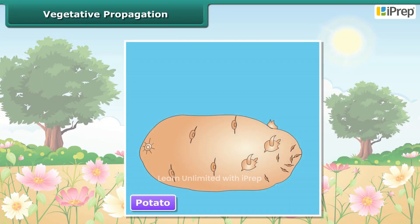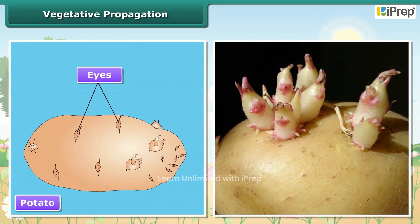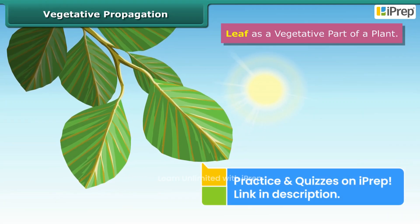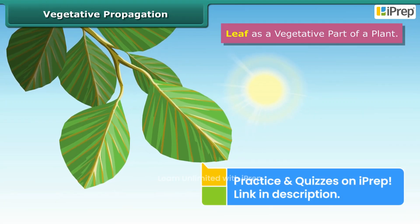Do you know potato is the edible stem of a plant? It bears small scars on it called eyes. These are the axillary buds. Each eye on a potato can give rise to new plants by forming a shoot above and root below.